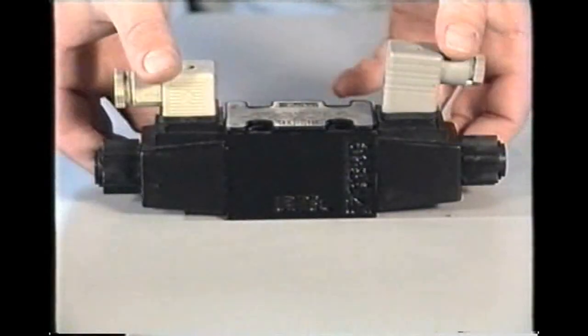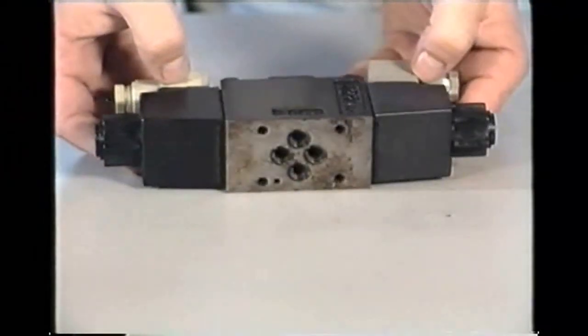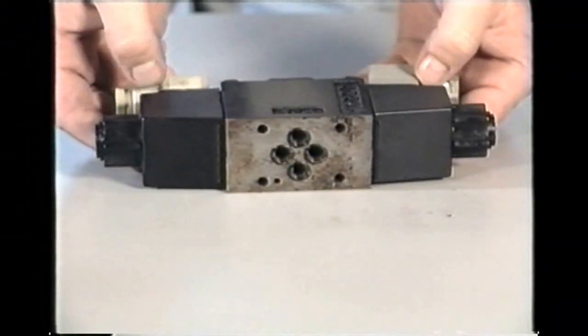A solenoid generates a relatively small force, so it can be used only with relatively small valves. Typically these are half inch valves or smaller, handling a maximum of 20 gallons per minute.